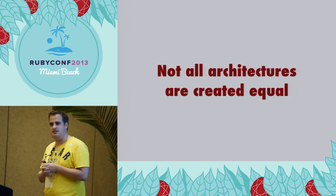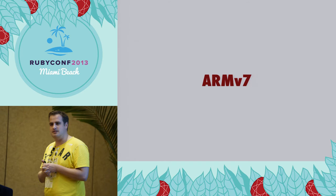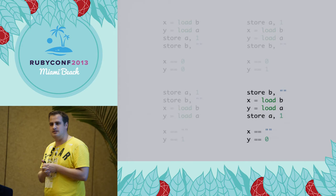Not all architectures are created equal. x86, the thing in your laptop, is fairly strict - it doesn't do a lot of things that could be confusing. But if you compare it to what you have in your phone, which is ARM v7 architecture or newer like ARM v8 with 64-bit support in the new iPhone - even ARM these days has multi-core systems. On ARM, it is actually allowed to reorder loads among each other, or swap stores and loads, or stores and stores. You can create the same problematic result by swapping some instructions - causing the same problem we had before. This is something that can happen on your phone, tablet, or whatever.